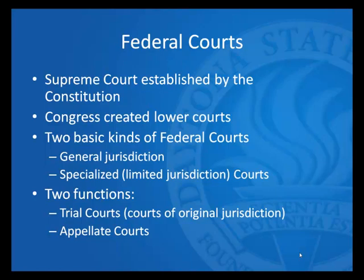The federal courts were established by the Constitution. There's actually a section in the Constitution that calls for the establishment of a federal judiciary and it gives Congress the right to create lower courts, which they have. They have created basically two kinds of courts: general jurisdiction courts, which handle most civil and most criminal things, and a number of specialized courts that have limited and specialized jurisdiction.